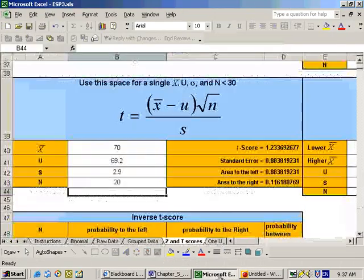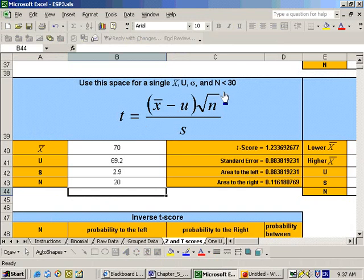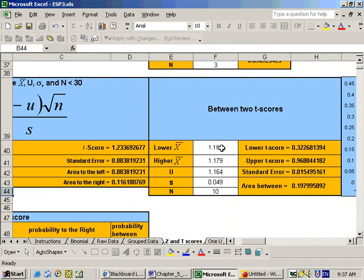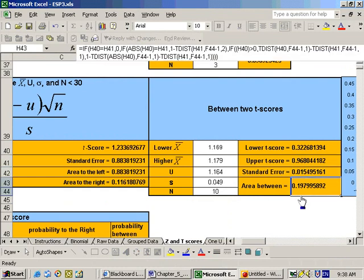So we go to the Excel sheet, same place, because we're dealing with a sample size less than 30. On this problem, we're dealing with a sample size of 10. But we're not dealing with left or right. On this problem, it says between two values, so we need to go to the right here. We put in our lower X-bar value, our upper X-bar value, our population mean, our sample standard deviation, and our sample size, and hit enter. And we'll get our answers to our lower T-score, our upper T-score, our standard error, and here's the probability that it falls between those two values. It's about a 19.8% chance, and that would be the answer to that problem.